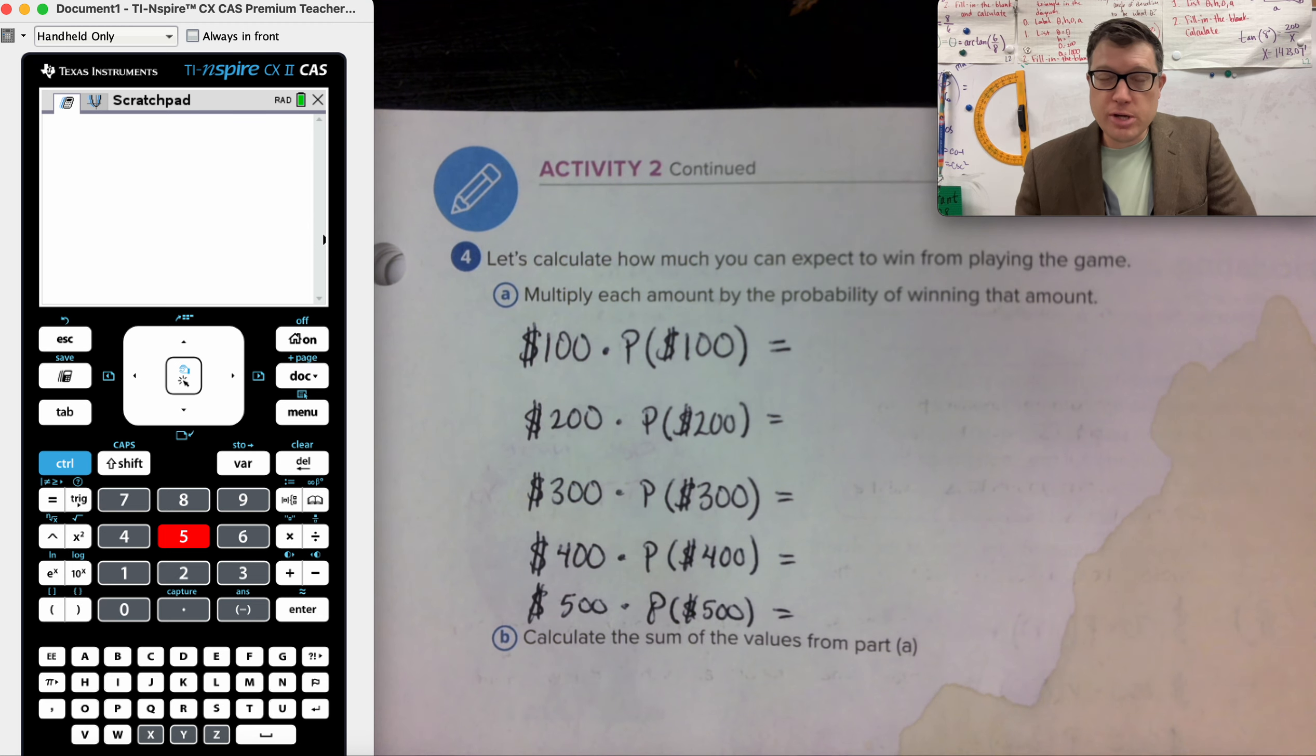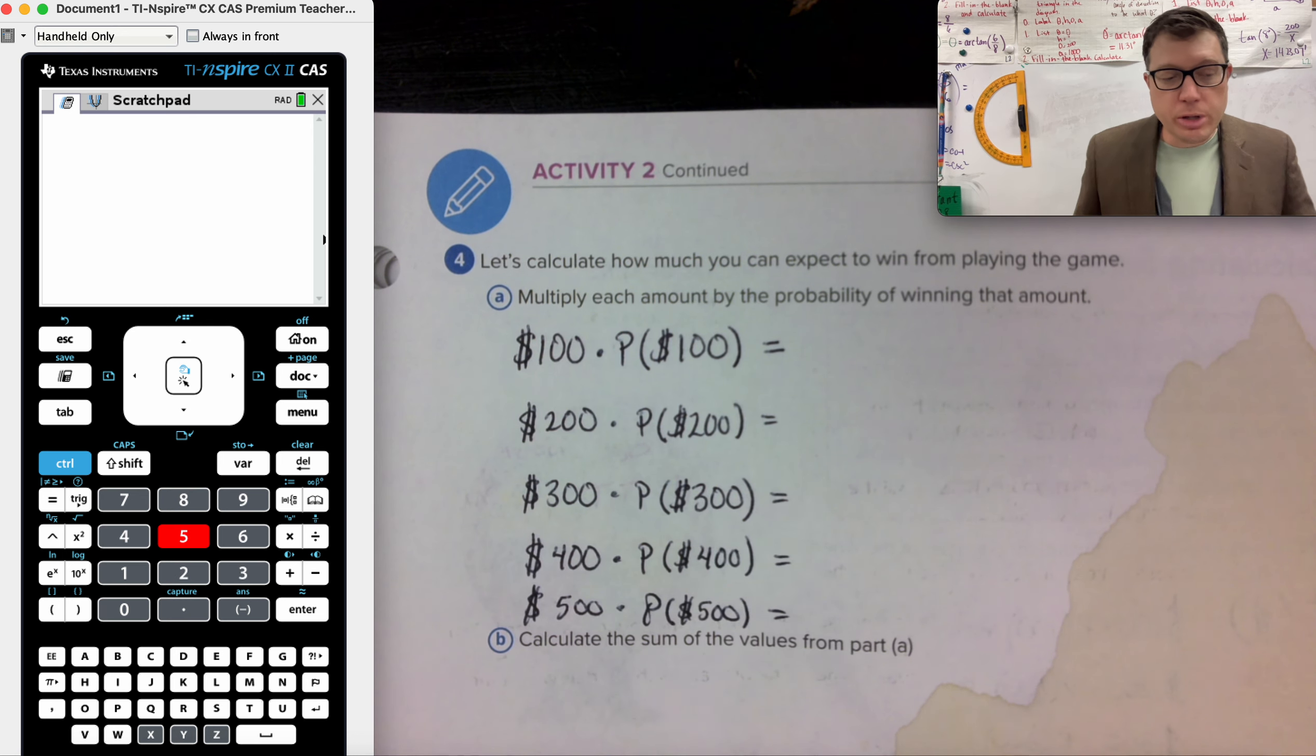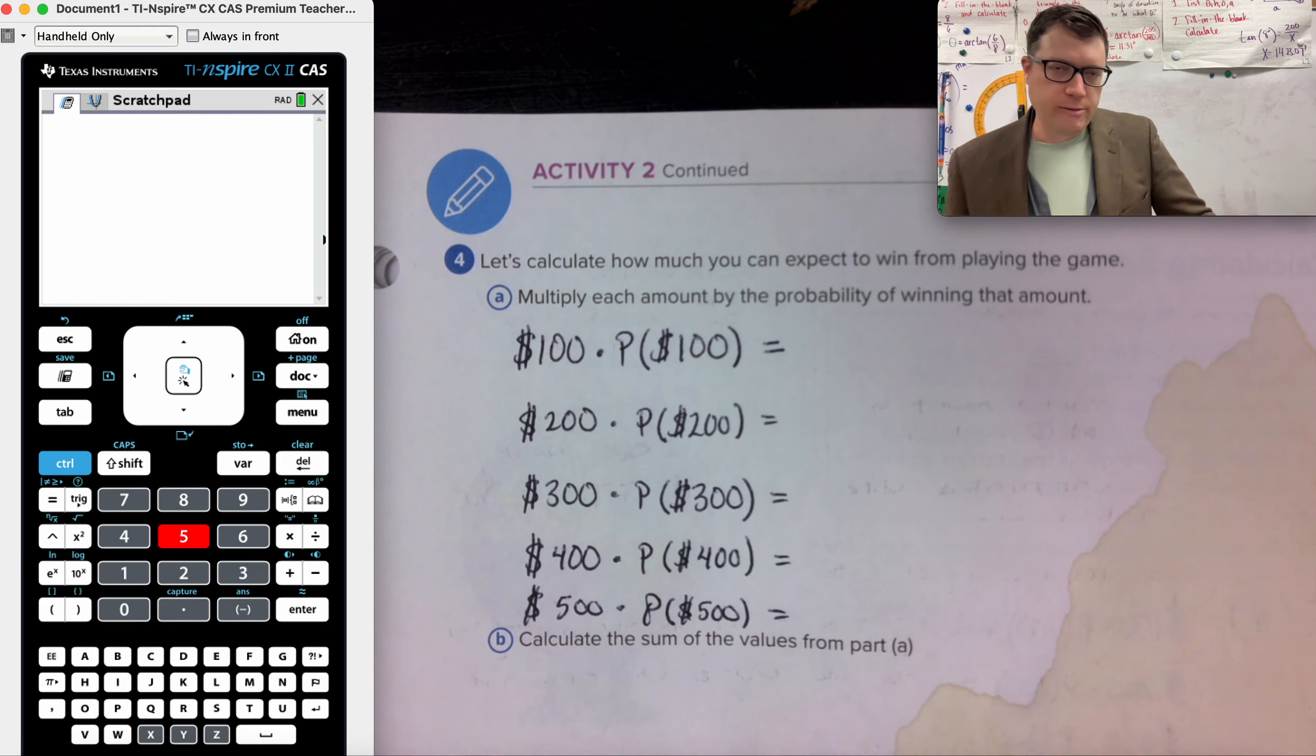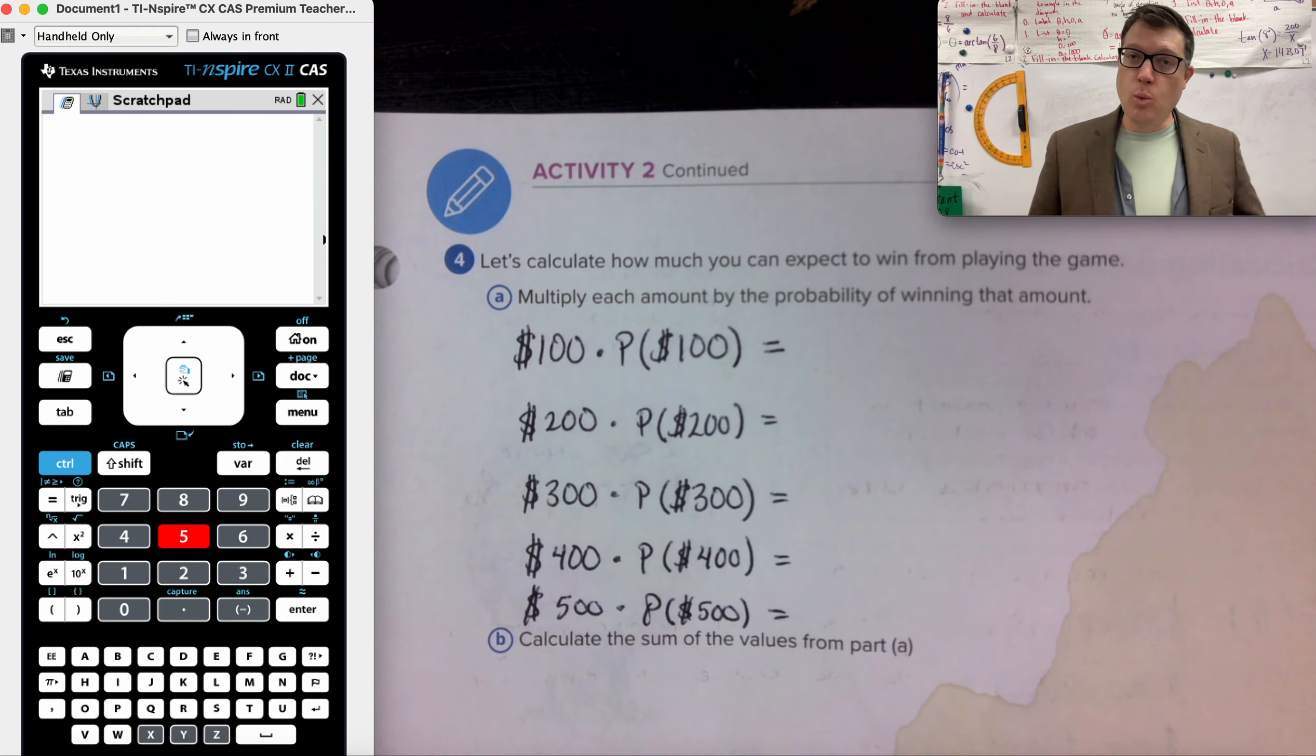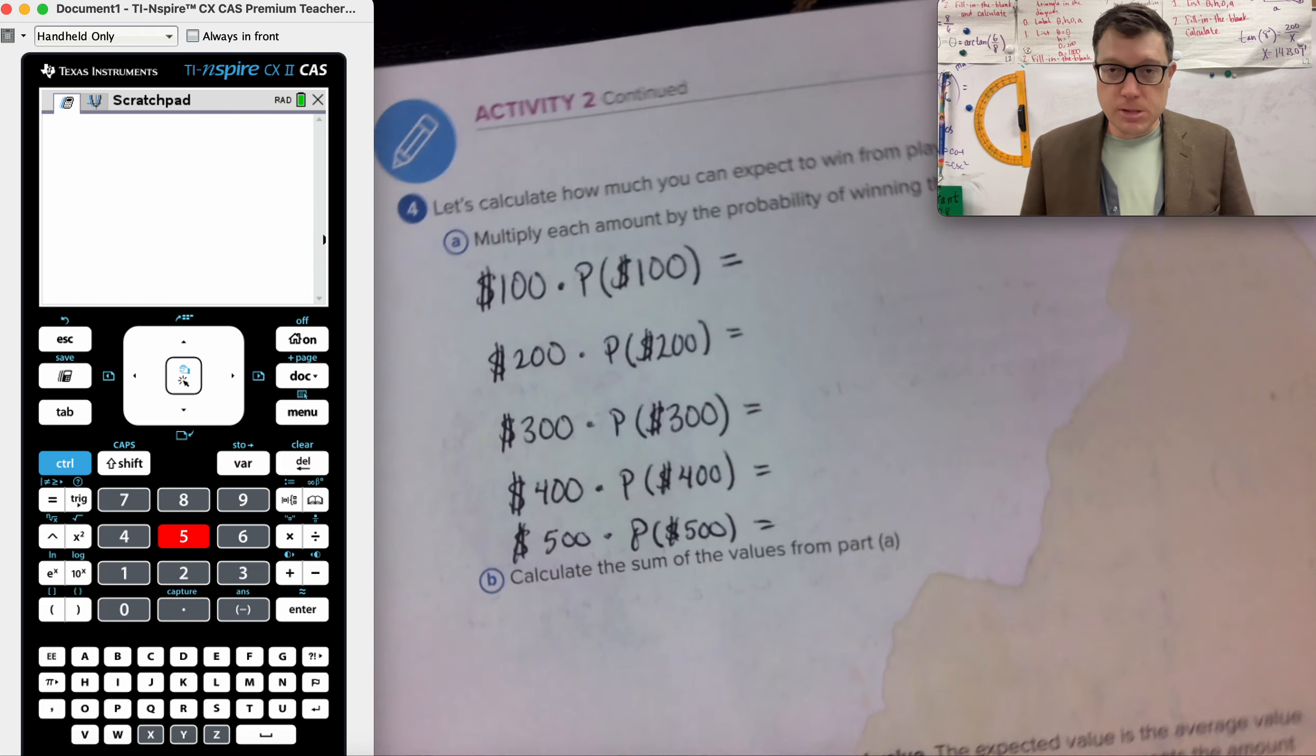This is activity two, a continuation of the conversation on expected value. In the previous page, question three, we talked about the chance of winning $100, $200, $300, $400, $500, and what probability it was that that was actually going to show up from spinning the wheel.